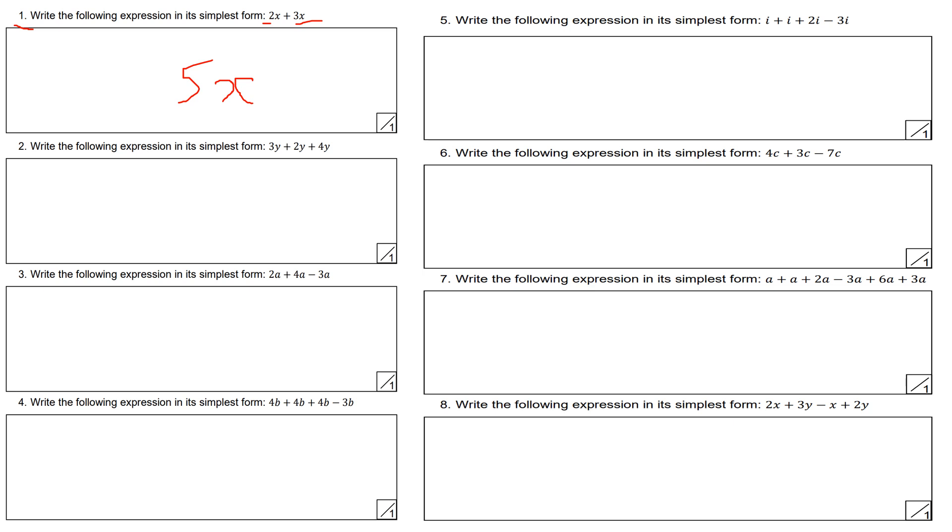Question number 2, write the following expression in simplest form: 3y plus 2y plus 4y. Well, 3y plus 2y is 5y, plus 4y is 9y. So I've got 9y in total.